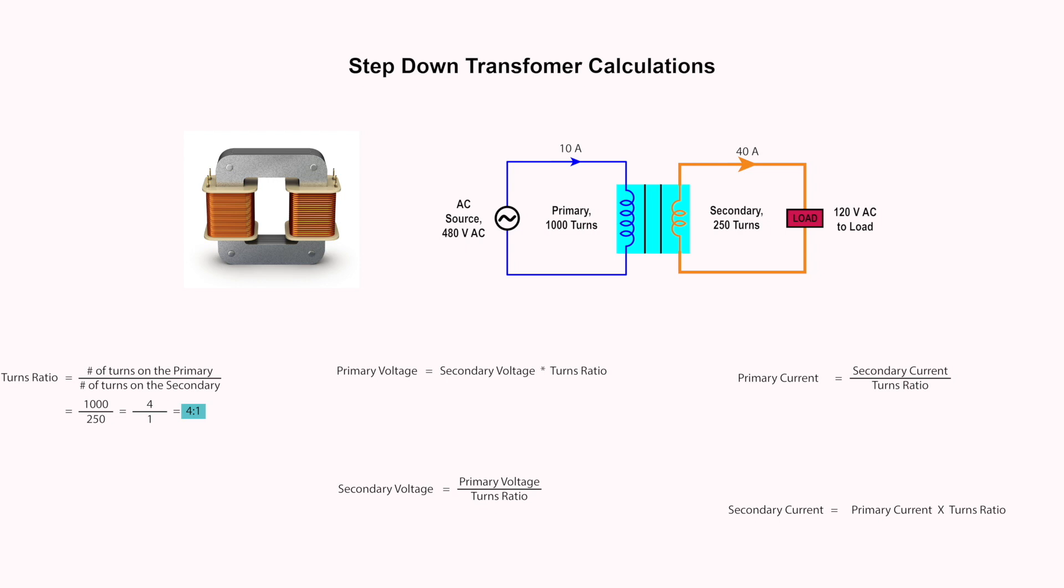If we know the voltage of one of the windings and the turns ratio, the voltage of the other winding can be calculated. Also, if the current of one of the windings and turns ratio are known, the current of the other winding can be calculated. The equations that were used in this step-down transformer circuit are the same equations that would be used for a step-up transformer.